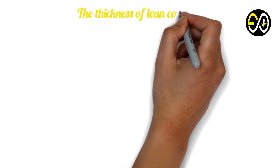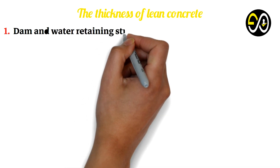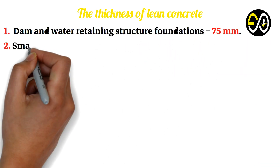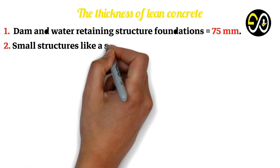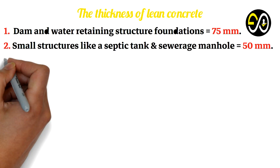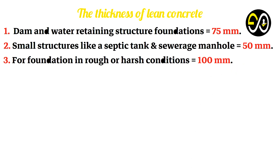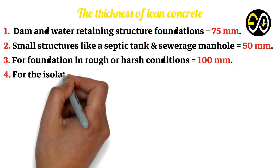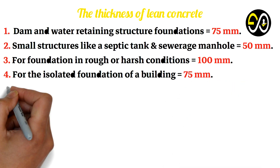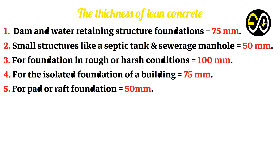Thickness of lean concrete: 1. Dam and water-retaining structure foundations — 75 mm. 2. Small structures like a septic tank and sewage manhole — 50 mm. 3. Foundation in rough or harsh conditions — 100 mm. 4. Isolated foundation of a building — 75 mm. 5. Pad or raft foundation — 50 mm.